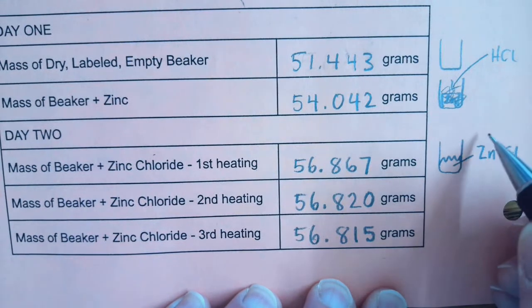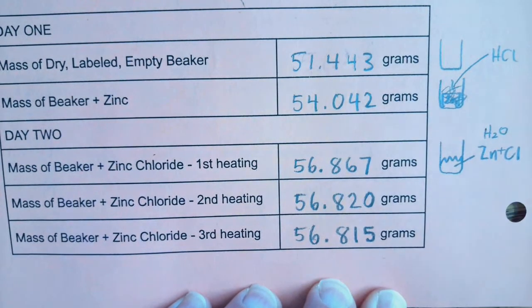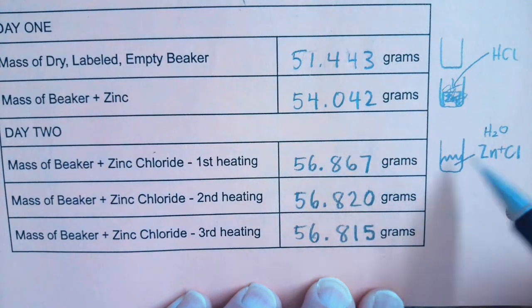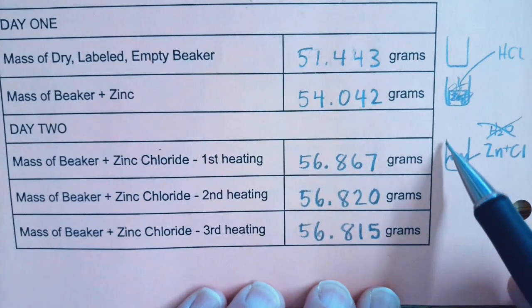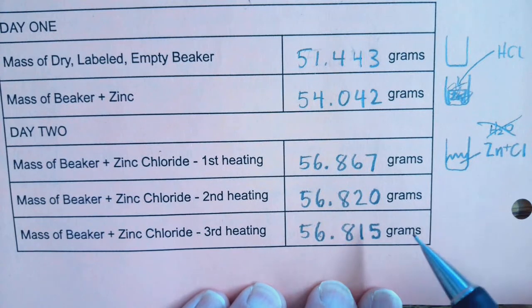Also at first there was some H2O that got absorbed from the air and so the purpose of these steps was to heat and drive off that H2O. So that when you're done, you just have your beaker and zinc chloride product.